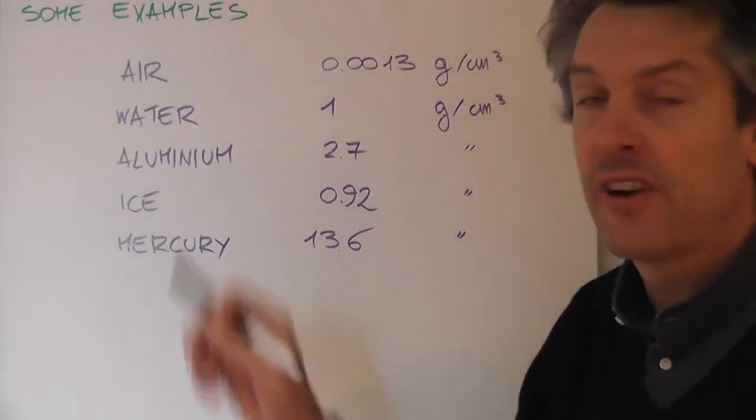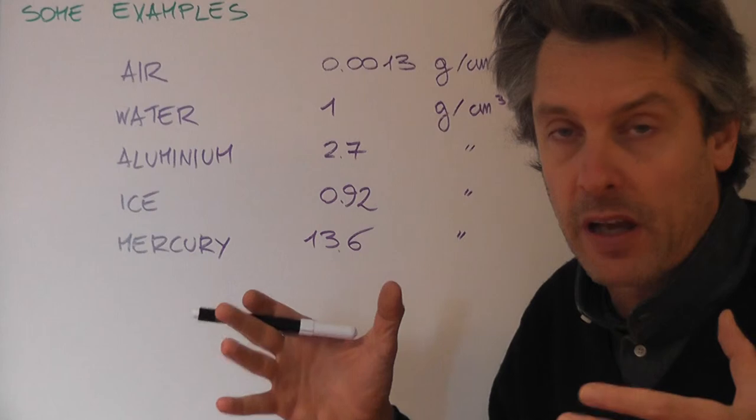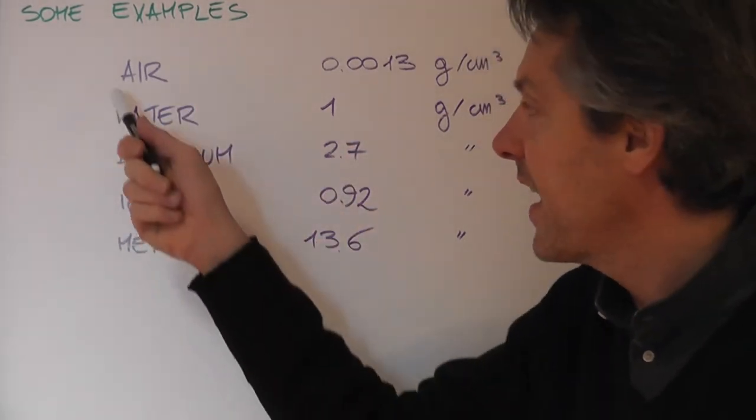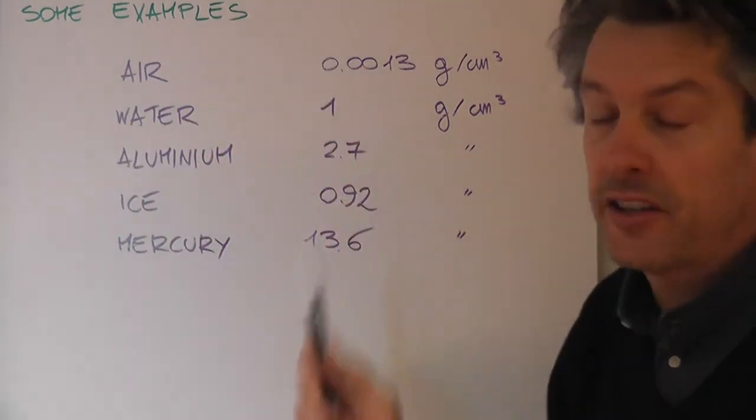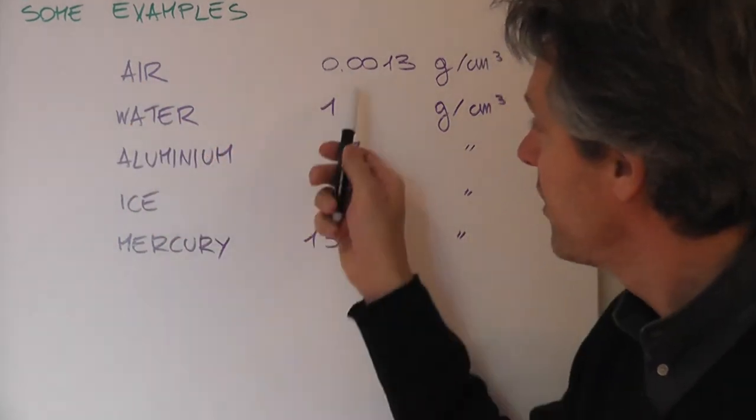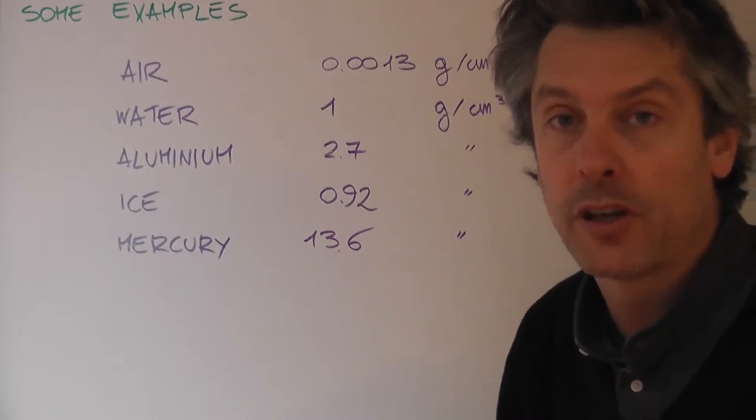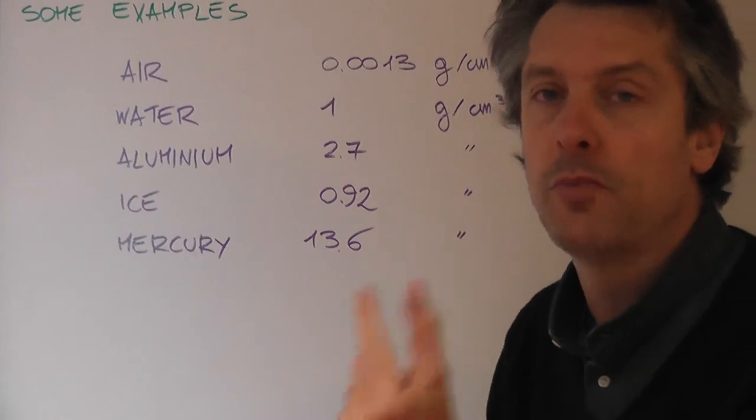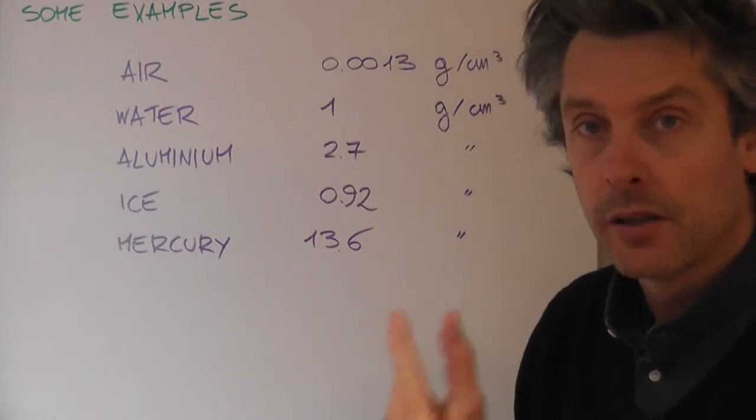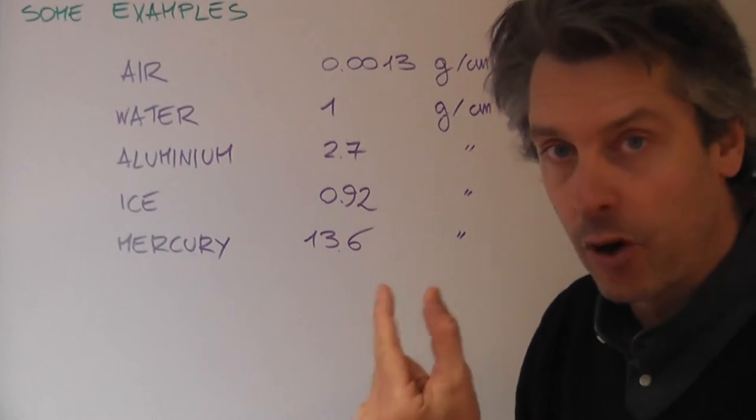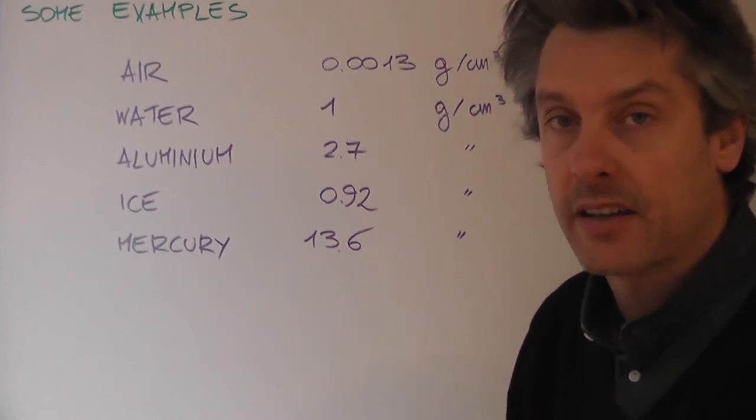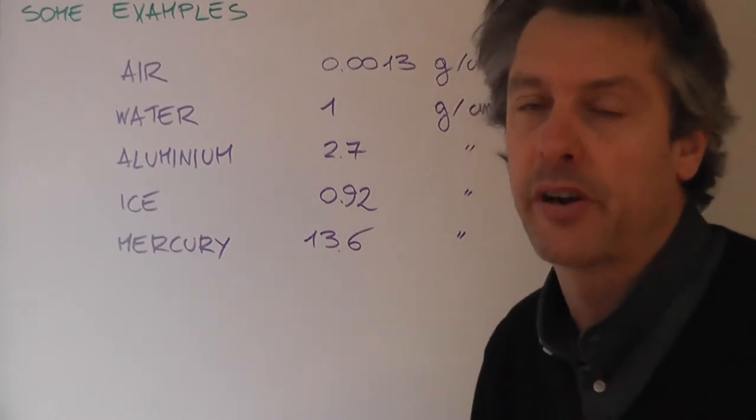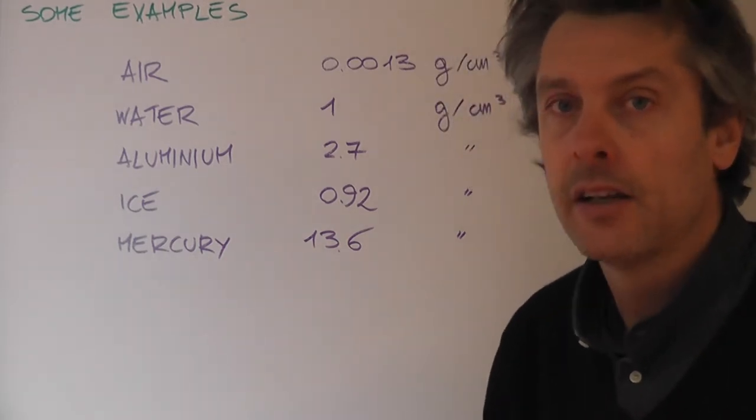We go from a very less dense object, a substance where molecules are really very much spaced apart, that is air. Air has a density of 0.0013 grams over cubic centimeters. That means if I take one cubic centimeter of air, this volume will have a mass of 0.0013 grams. That is very, very small, and that's not a surprise.